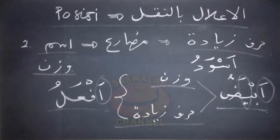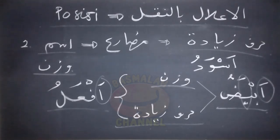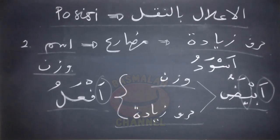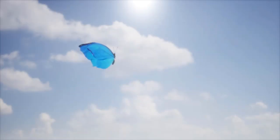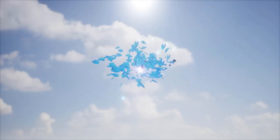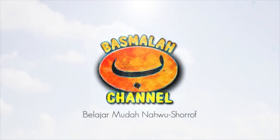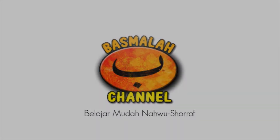Ini adalah beberapa posisi dari terjadinya al-i'lal bin naqli. Dimana yang pertama adalah posisinya berada pada ain fi'il dari fi'il mu'tal, dan yang kedua adalah berada pada kalimat isim yang menyerupai fi'il mudore, baik keserupaan tersebut dalam segi harkat dari wazan fi'il mudore ataupun dalam segi huruf tambahannya. Untuk posisi yang lain akan kita bahas pada pembahasan berikutnya. Silakan dipelajari dengan seksama dan sampai jumpa pada pembahasan berikutnya.